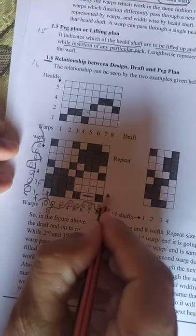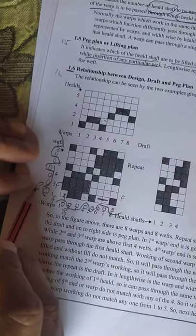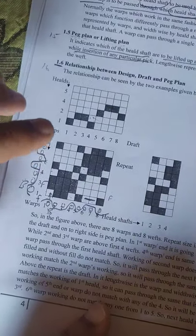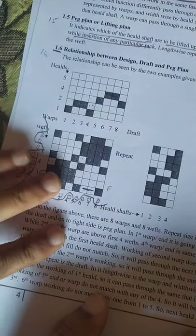This way you can see the fabric face and the other way you can see the fabric back. So you need to create draft, peg plan, and sectional view. If you want to create a design, you will need to create sectional view. This is the whole example.